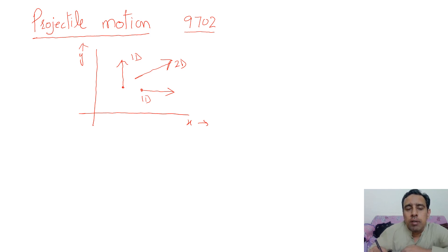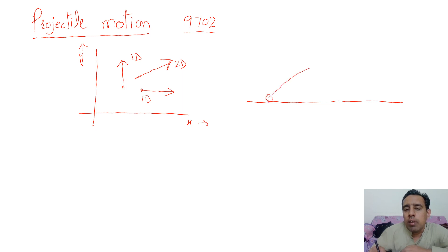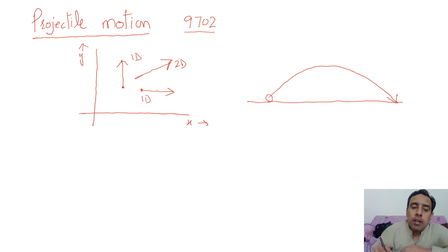For example, if we have a football field and a footballer kicks a football, the journey of the football follows a curved path — this is two-dimensional motion and this is projectile motion. The most important thing is how many forces are acting during the projectile motion of the body and how we can describe the acceleration. Look at this graph here.